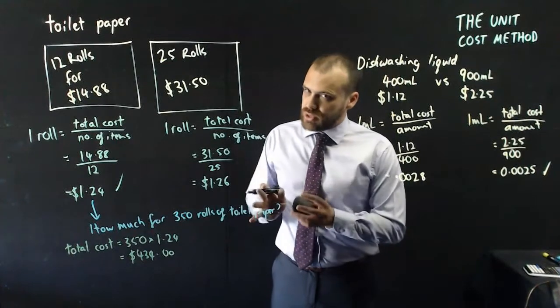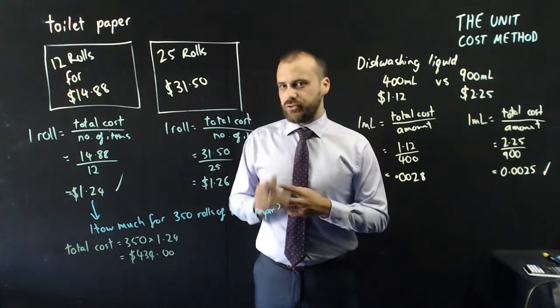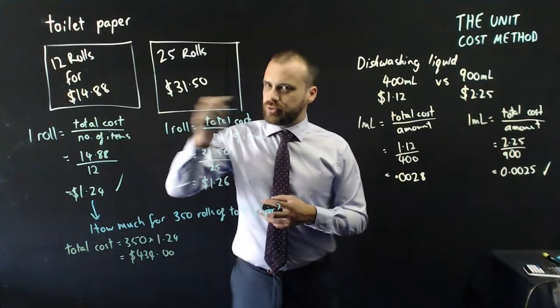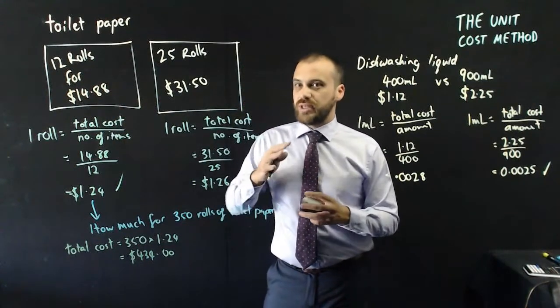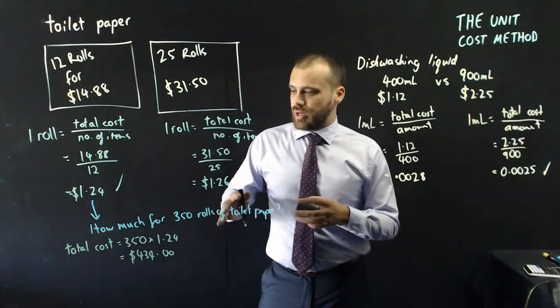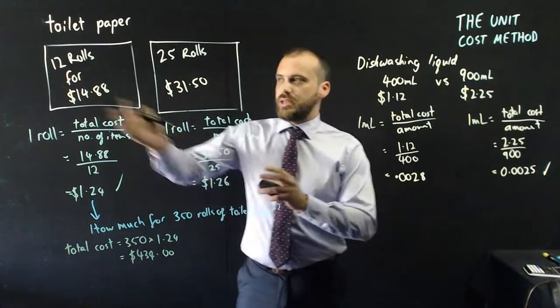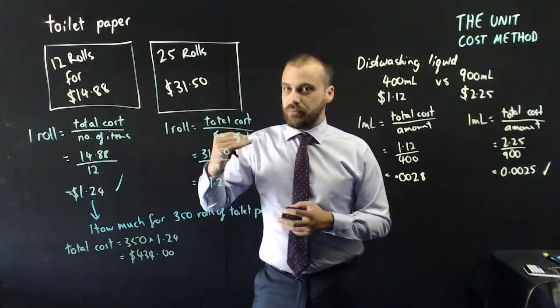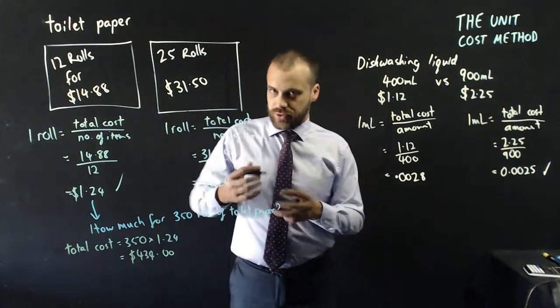Now, I said it depends on how this question's asked. Because if you needed to buy 350 rolls of toilet paper, you couldn't do it because 12 doesn't go into 350 neatly. If you do 350 divided by 12, you don't get a nice, neat number of these packets. You would actually need to buy more than 350 rolls.